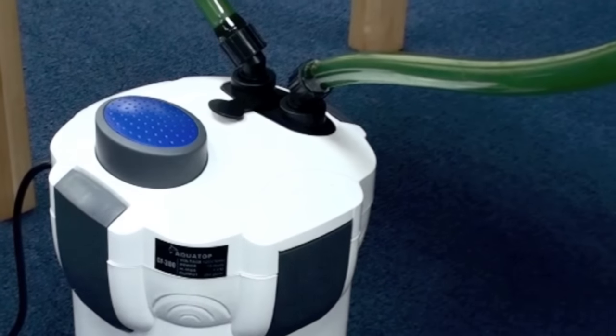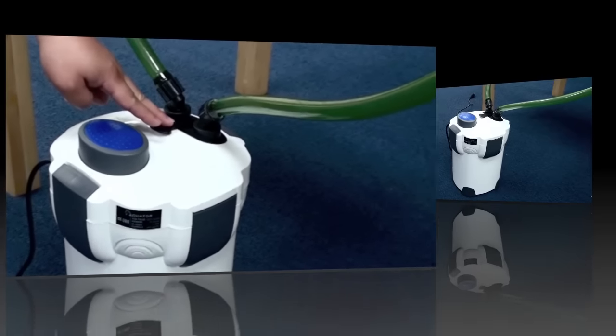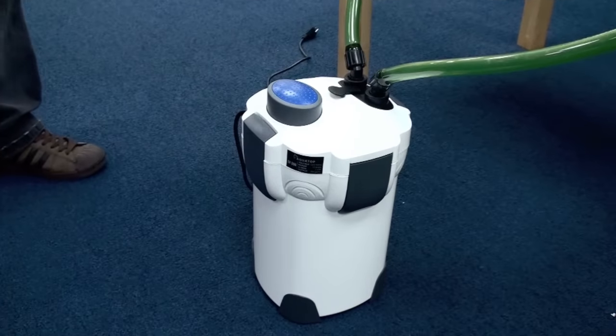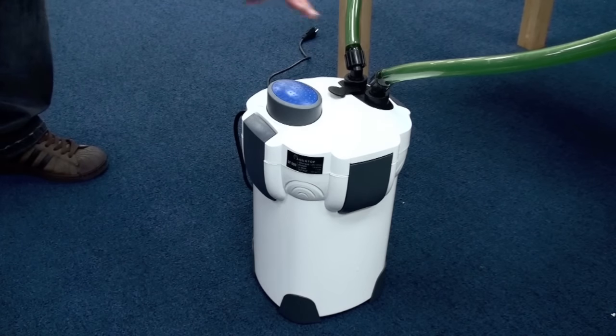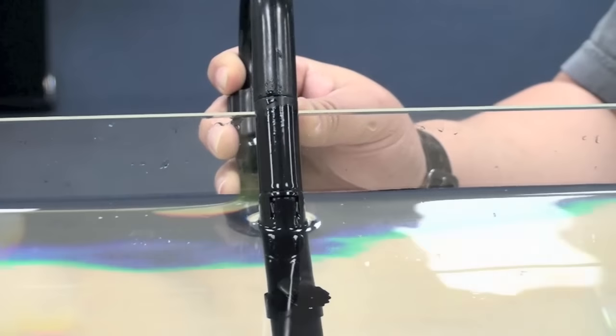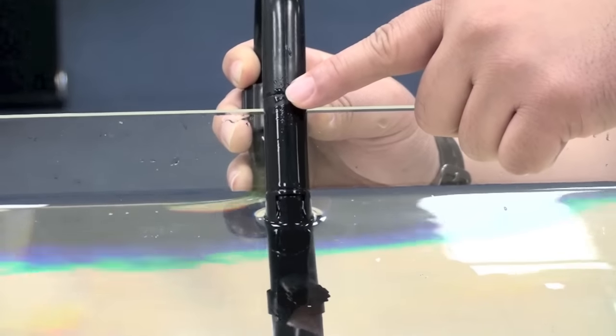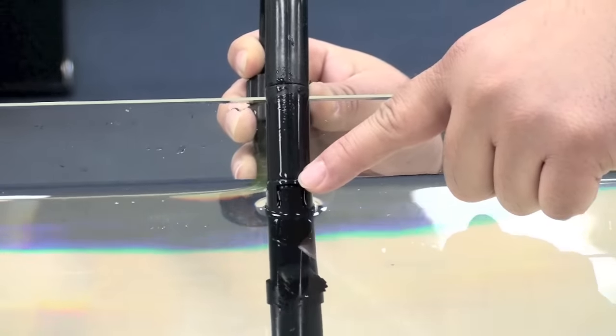Next, check that the valve lever is in the open position. Make sure your tubing connections are secure on all ends. Ensure that your input bar connections are fully submerged under your waterline.